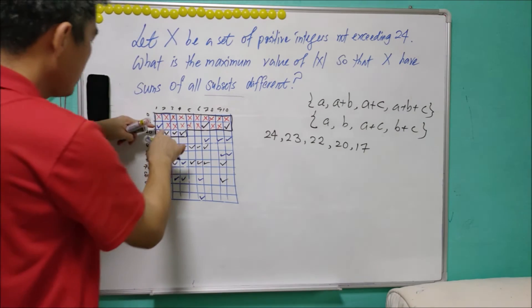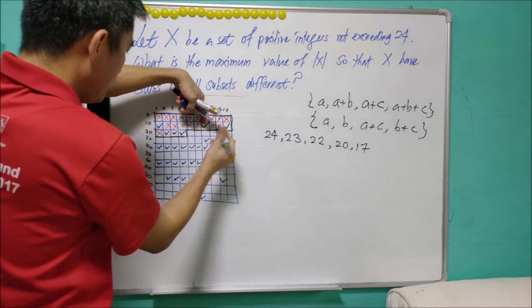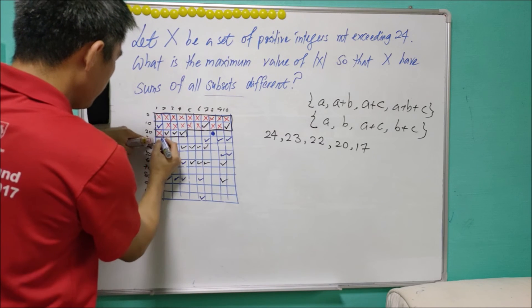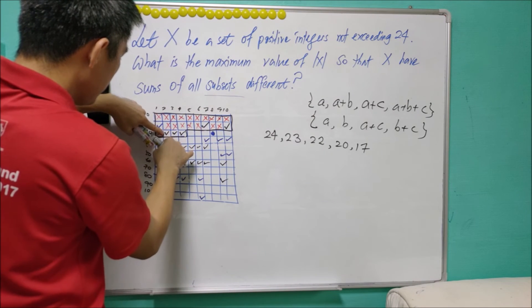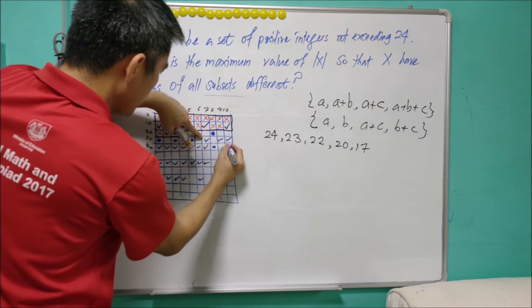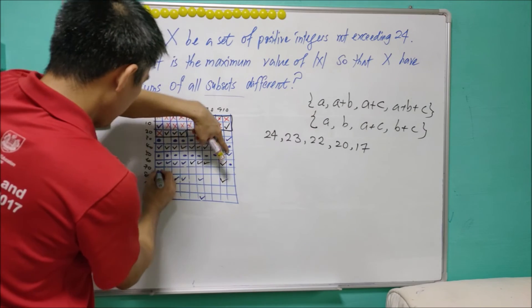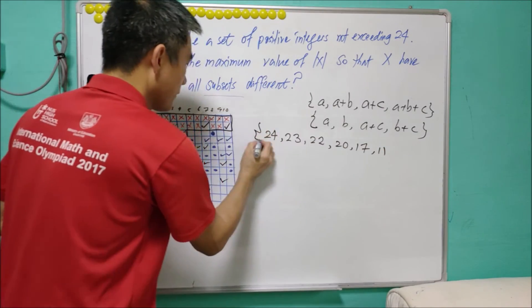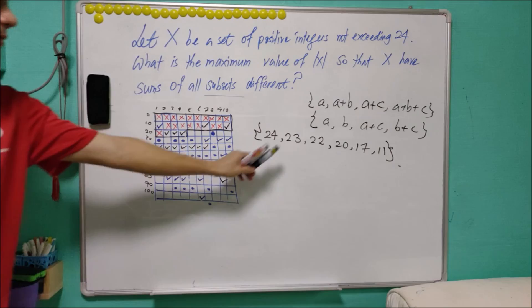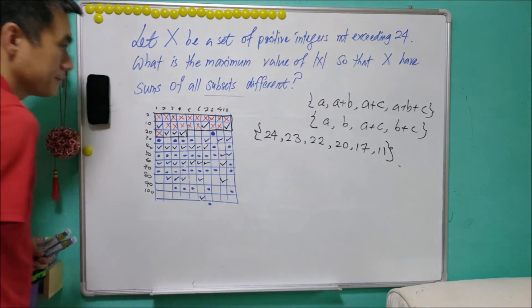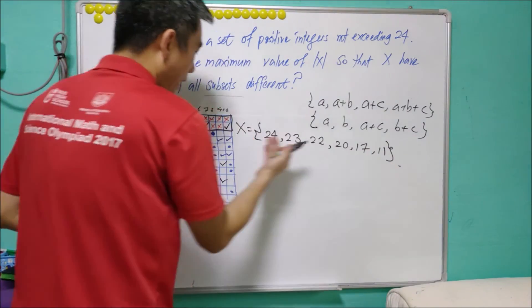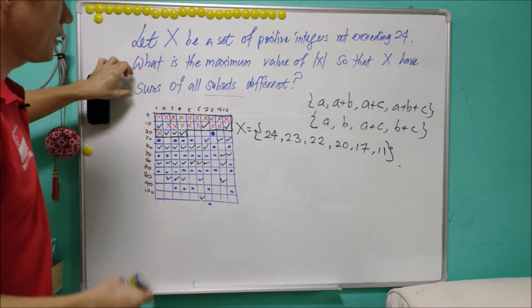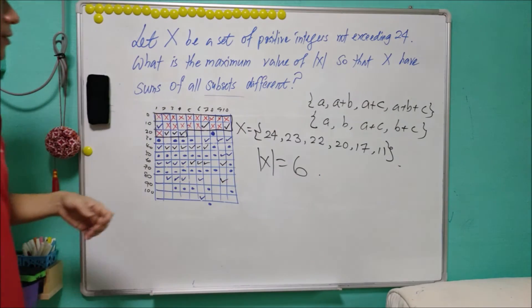So with 11, this will go to here. So this will go to here and this will go to here. For this, it will go to here. If we include 11, this is one possible case. So do you believe that this is actually the unique answer? With this sixth element set X = {24, 23, 22, 20, 17, 11}, it nicely, beautifully satisfies the condition. And therefore, 6 will be the answer for this question.